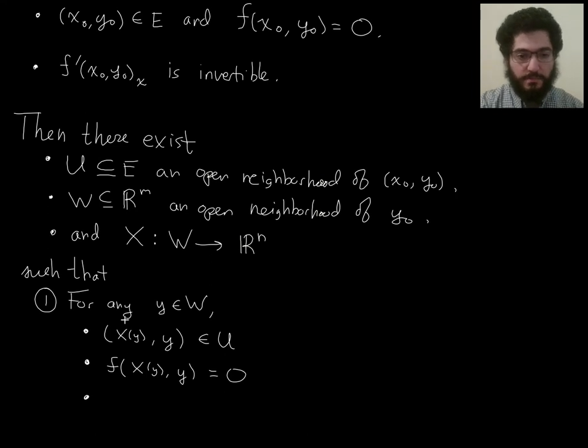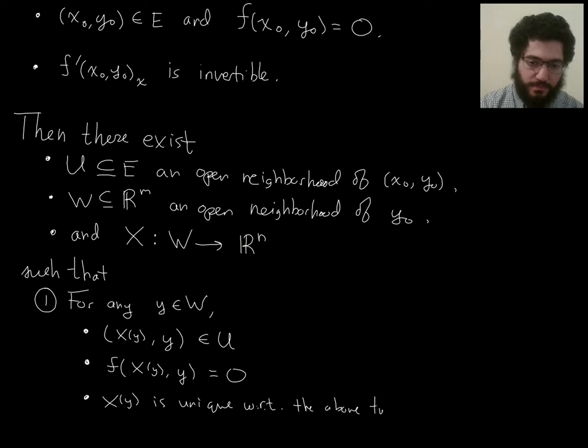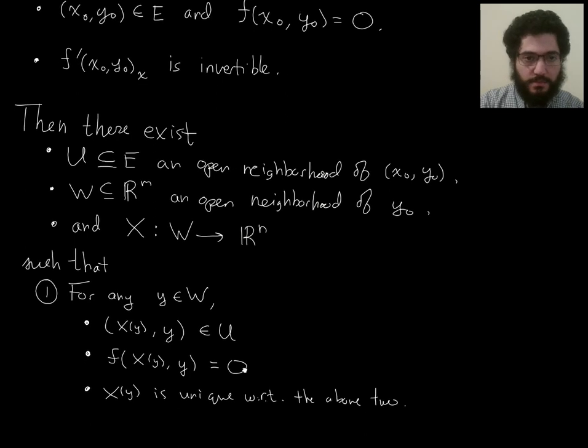And, finally, is uniqueness. So, X(y) is going to be unique with respect to having these two properties. So, it's the only, you could call it, little x. So, little x equals X(y) is the only value of little x that would fit here and here and make these true. So, to any, in other words, to any, for any little y in W, there is a unique little x such that little x is related to little y according to the equations specified by f. So, let me state it like this, X(y) is unique with respect to the above two bullet points.